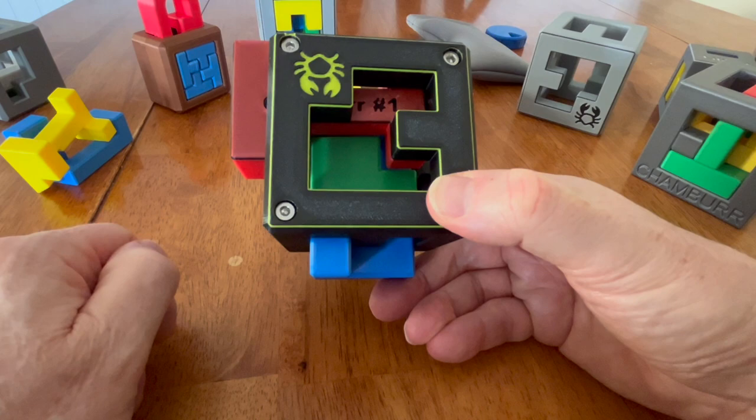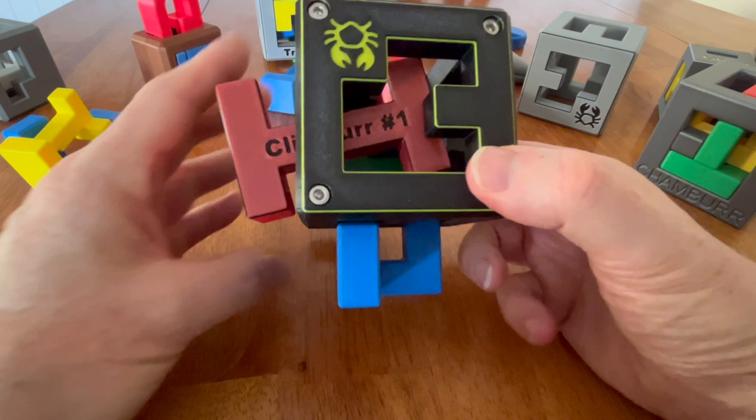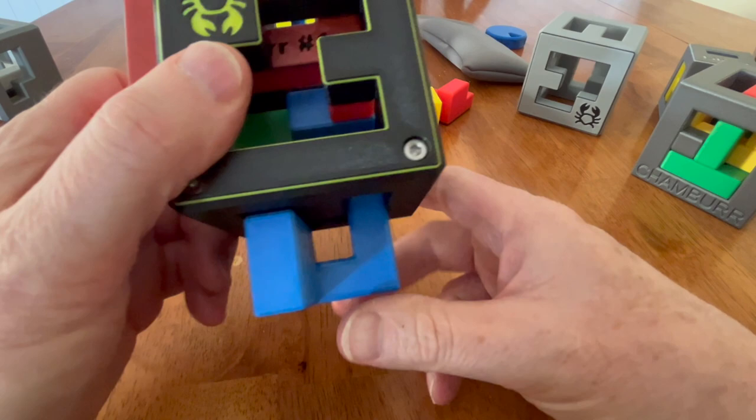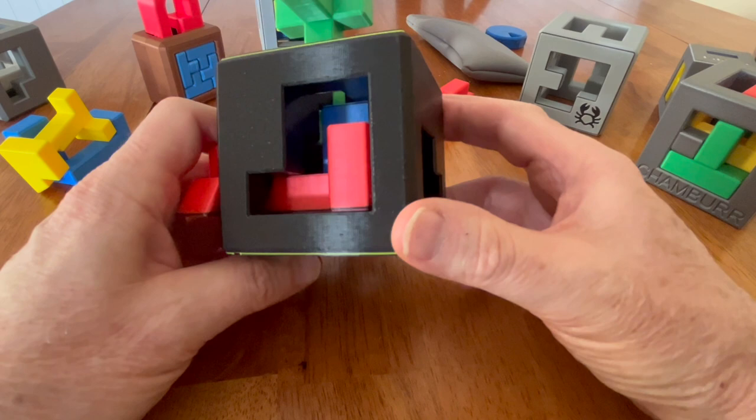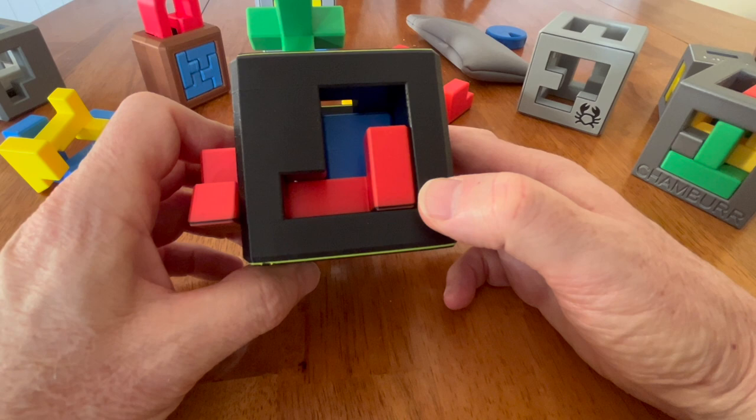And from here, the puzzle sort of can fall apart on you a little bit. So if we look at this from this view, we've got a green piece down there. And I'll bring the green piece back and out. So this is the position, sort of the first position of the puzzle that's stable.